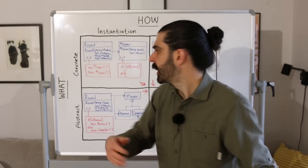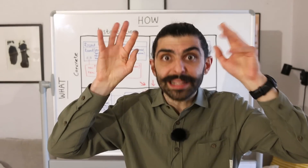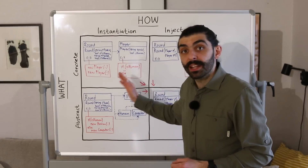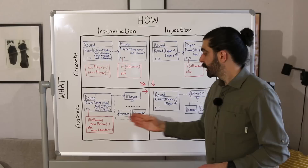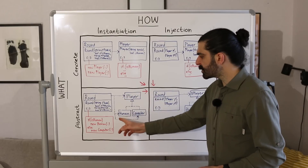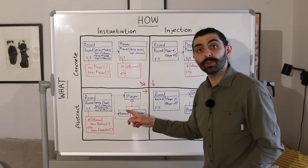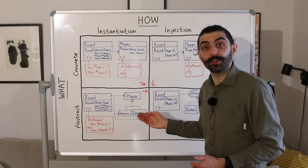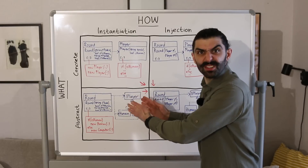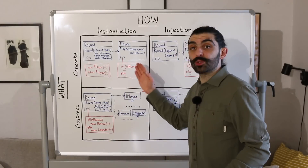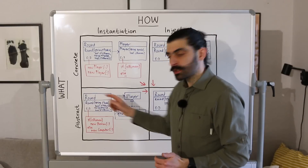If it's a human, it asks for user input. But if it's a computer, it just chooses a move on its own. If you're familiar with the principle 'replace conditional with polymorphism,' your alarm bells should be going off right now. Clearly this is a conditional that could be replaced by polymorphism. We would introduce an abstraction — we move from concrete to abstract. We introduce an interface called IPlayer, and then we have two subtypes: one called Human and one called Computer. We move the algorithm of human behavior into the Human subtype, and the algorithm of computer behavior into the Computer subtype. These classes should probably be called HumanPlayer and ComputerPlayer for clarity.